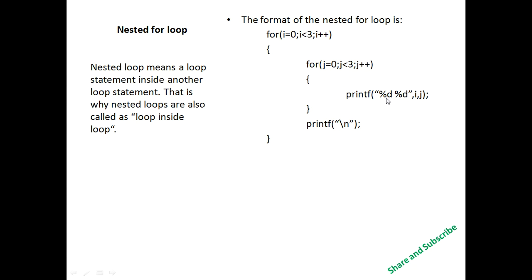When printing the values of i and j, we must include '\n', which means it prints a new line. Using this for loop we get the output in matrix form, and using this loop we can create a 3x3 matrix.